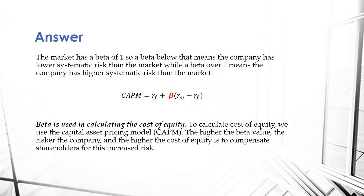The market has a beta of 1. A beta below 1 means the company has lower systematic risk than the market, while a beta over 1 means the company has higher systematic risk than the market.